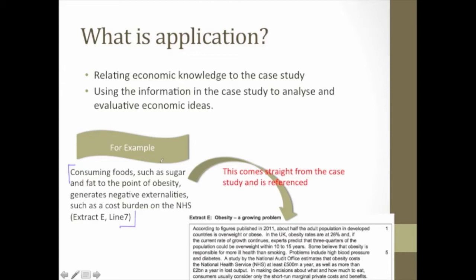This is just a quick sentence I've taken from there to show you how to apply. Here we have: consuming foods such as sugar and fat to the point of obesity generates negative externalities such as a cost burden on the NHS. That is a simple point that I have made based on specific information from the case study I was given in that question.